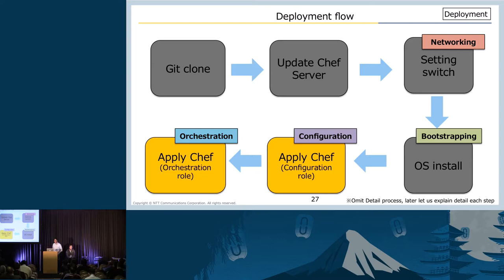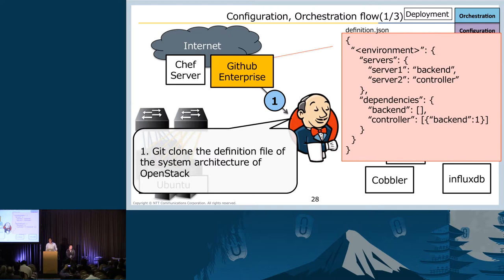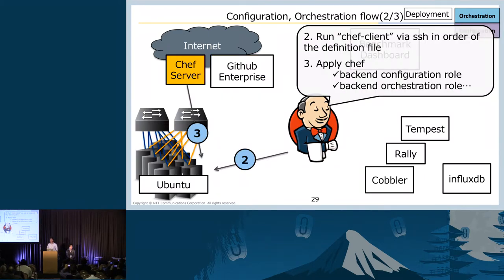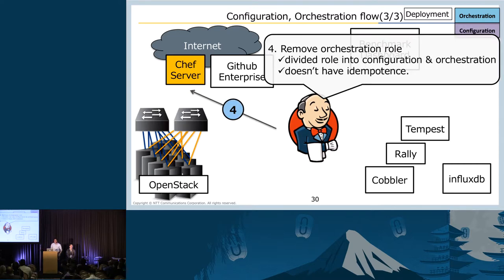Let's move on to configuration and orchestration. The first step is to Git clone the definition file of OpenStack structure, which describes the role of servers and order of server setup. Next, we apply the Chef script in order of the definition file. Installing Keystone requires a database and messaging queue, and for production we need HA clusters for both. So our Chef script starts from configuration of backend servers including database and messaging queue, then the servers are orchestrated to join HA clusters by Chef's orchestration process. When we finish applying the Chef script, we remove the orchestration role from the Chef server, because orchestration scripts have risks of breaking HA clusters. Now we have the OpenStack cloud.